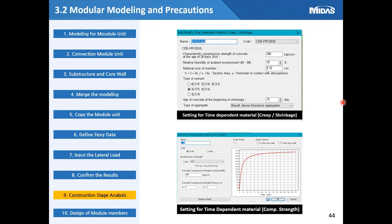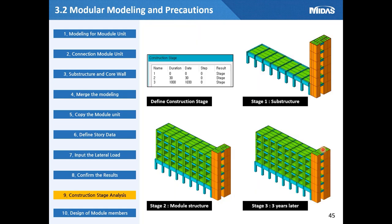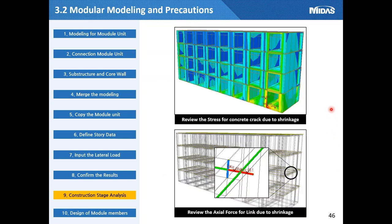Midas Gen can also perform time-dependent analysis in modular architecture, setting the material settings and strength over time. It is necessary to perform construction stage analysis and material setup. For convenience, we will check the time setting at the installation time, after one month, and after three years. The first figure shows the stress change for examining cracks in the concrete due to shrinkage. The figure below confirms the axial force for examination of the joint due to shrinkage.